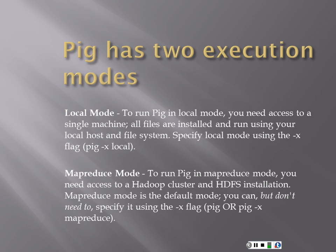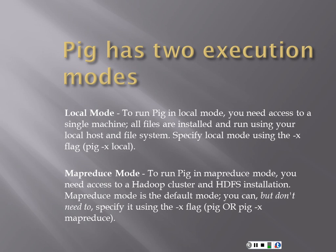There are two execution modes. In local mode, you just need access to a single machine — all the files are installed and run on your local host and file system. Everything's on one box. What we want to do is run this in MapReduce mode, which requires access to the Hadoop cluster. MapReduce mode is default — if you don't use the X-Flag it will automatically assume MapReduce mode. If you use the X-Flag, it assumes you're only using one box.